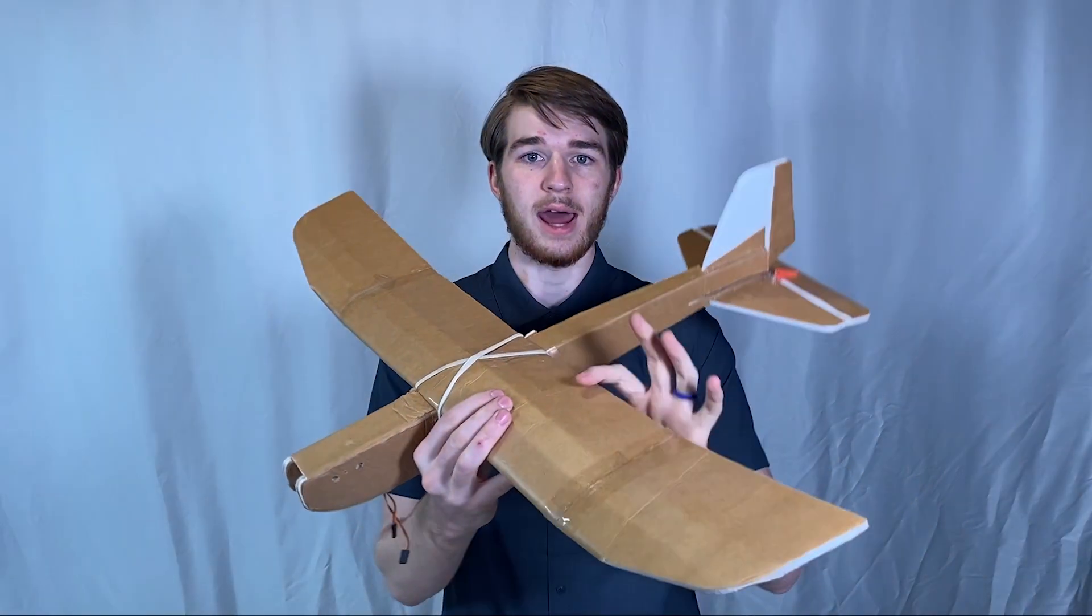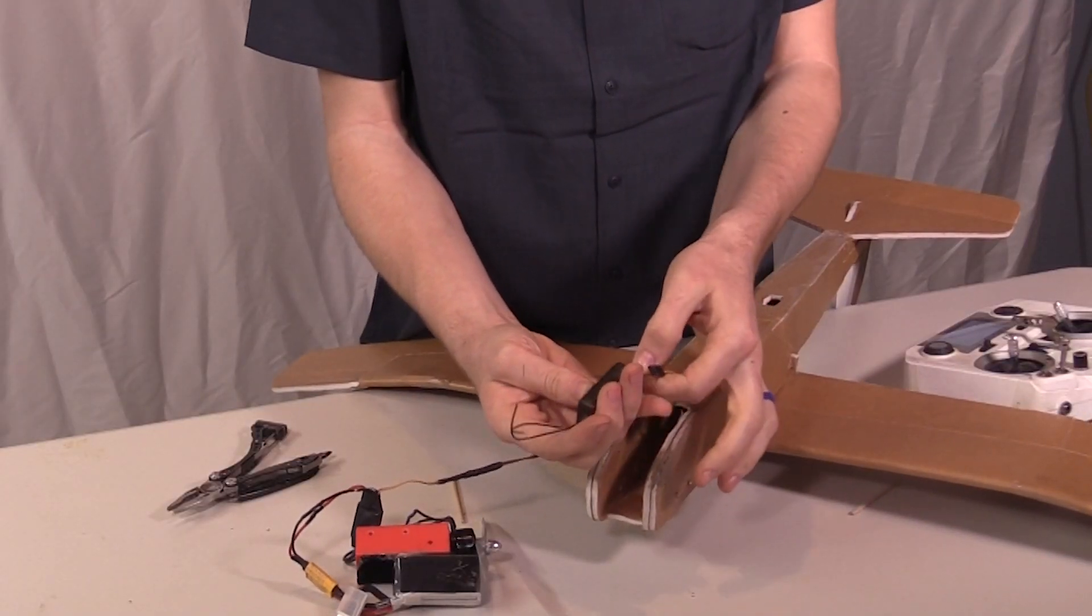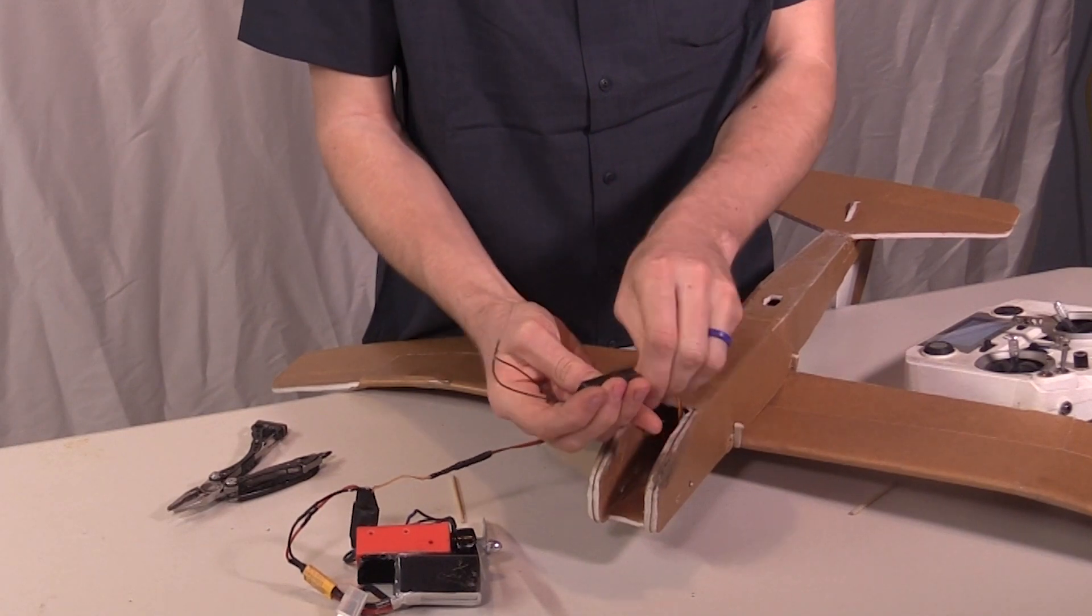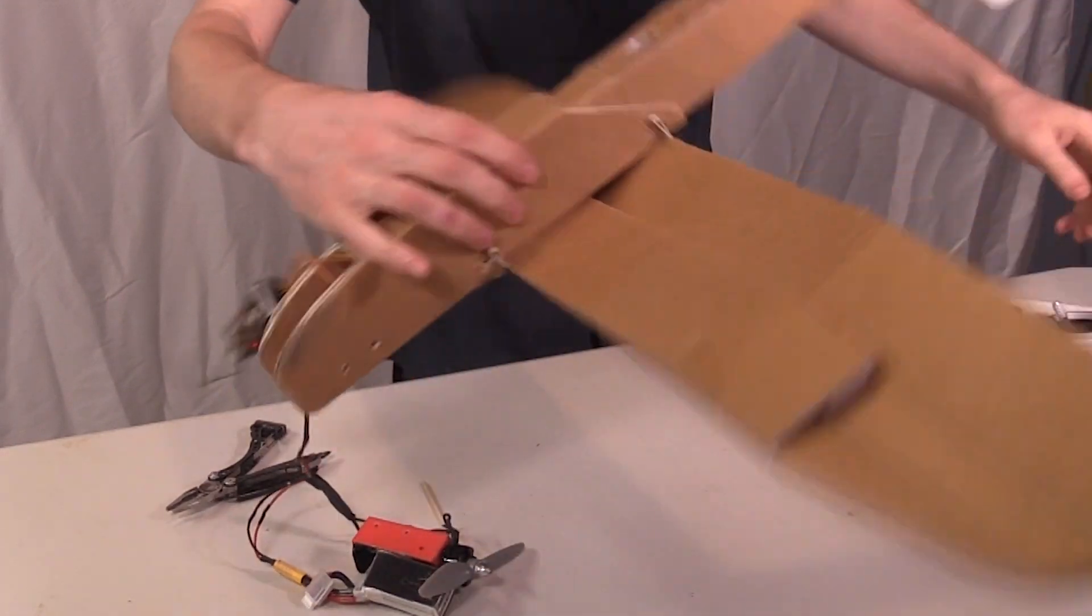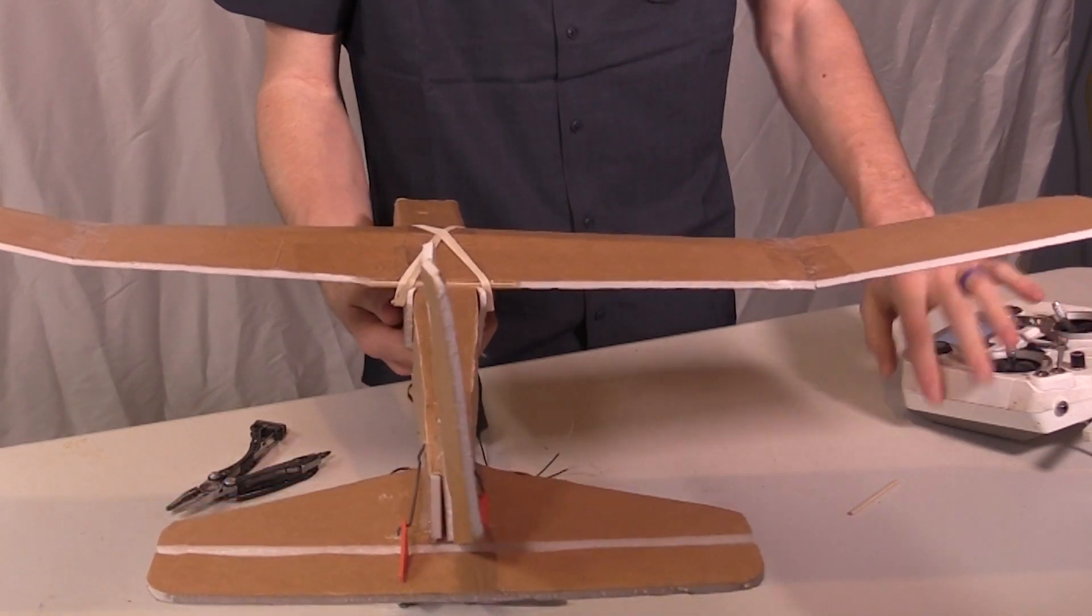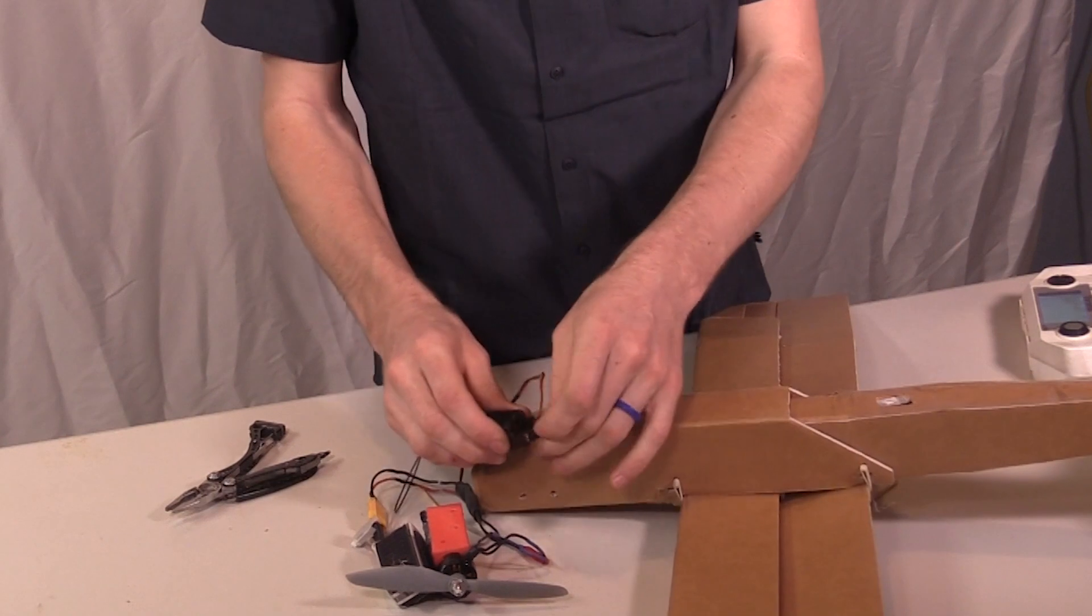Basically all we have to do to wire up this airplane is we need to plug in the servos first. So we'll take it, we'll plug in our rudder and our elevator. Not really sure which is which. If we have it plugged into power, we can just test that on our controller here. So that's our elevator stick, so it correlates backwards, so we can just take and flip those two.